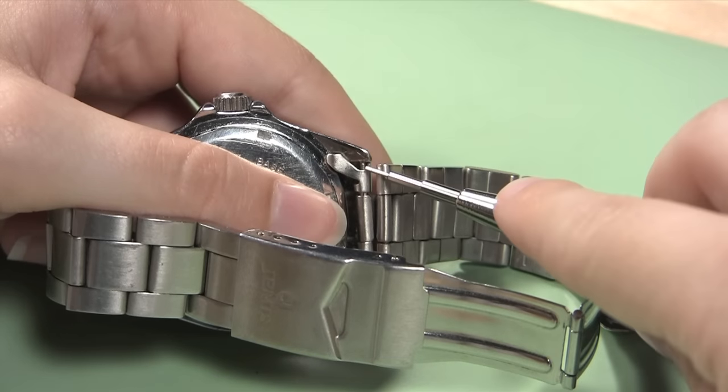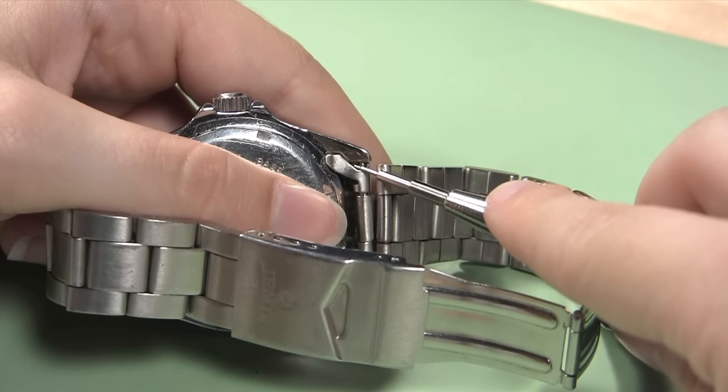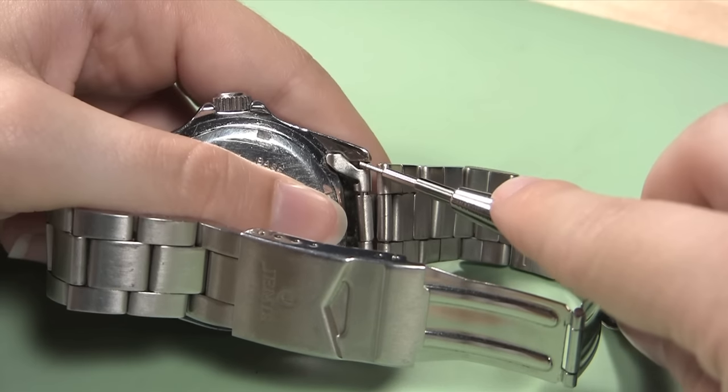One side of your band should be accessible to you, and you will see the spring bar in the small gap between the end piece and the lug where the piece dips away.